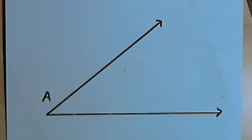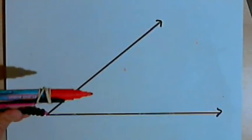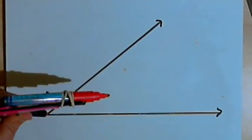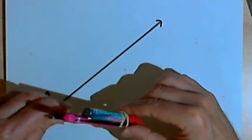So I've drawn an angle and I've labeled the vertex of the angle point A. Now I'm going to take my compass and place the point of the compass at the vertex. I'll open up the compass to a comfortable width.